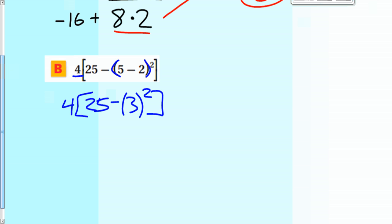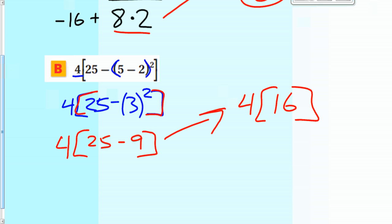Now we look for more grouping symbols inside the brackets here. We have some stuff. So we're going to keep taking care of this stuff. So we have 25 minus 3 to the second power, which is 9. Okay. So we have to take care of exponents before we do anything else. And then we're going to do 25 minus 9 on the inside there. Bring this up here. And we have 4 times 16. 64. Alright. So that's those two.